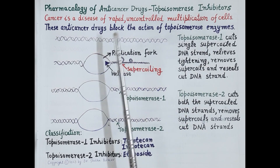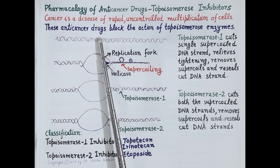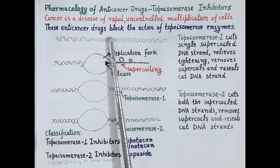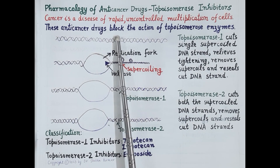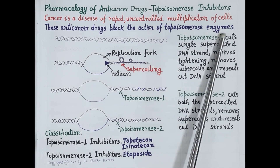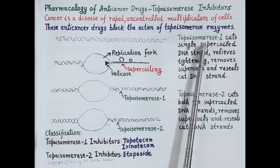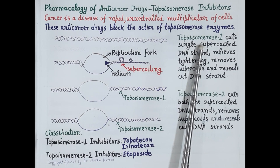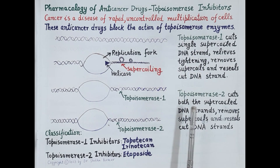Topoisomerase inhibitors are the anti-cancer drugs that block the action of topoisomerase enzymes. In order to understand the mechanism of action of these drugs, let's study the functions of the enzymes topoisomerase 1 and topoisomerase 2.